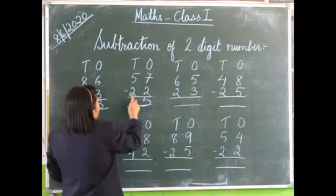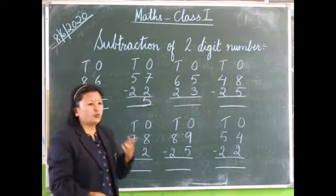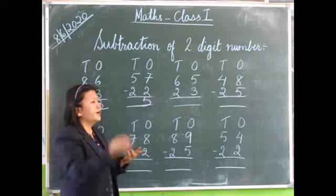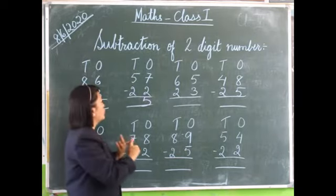Five minus two. Five on the head, two in our fingers. We count backwards: five, four, three.